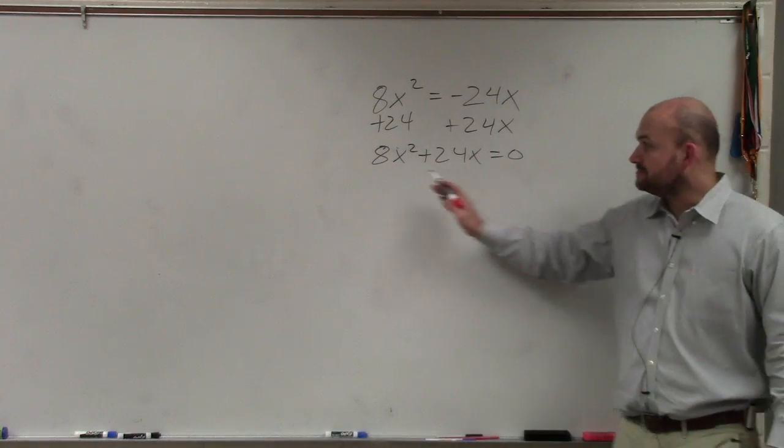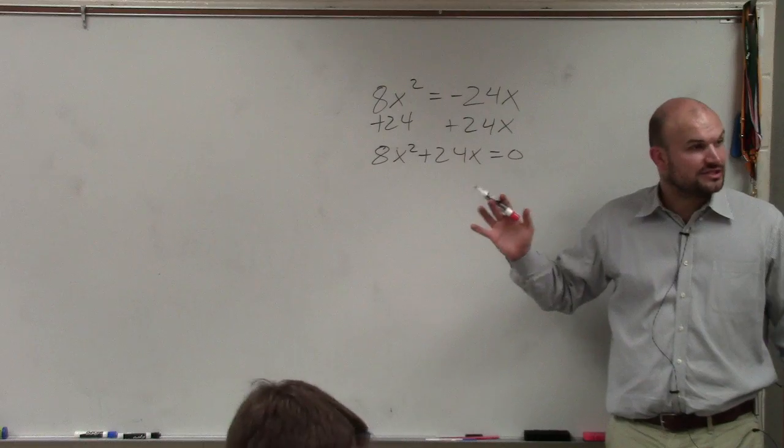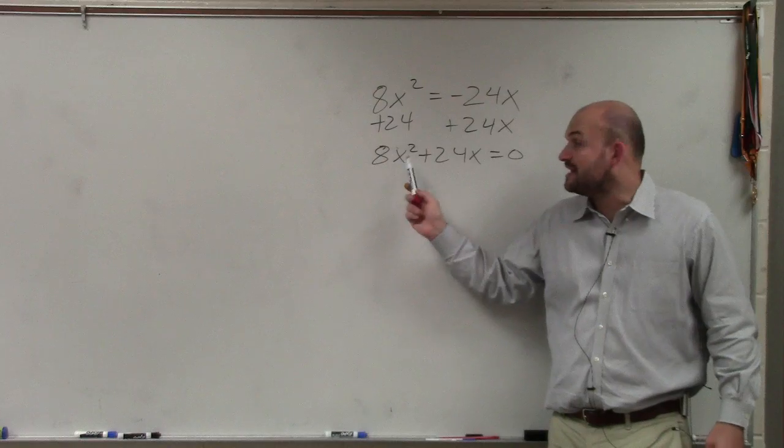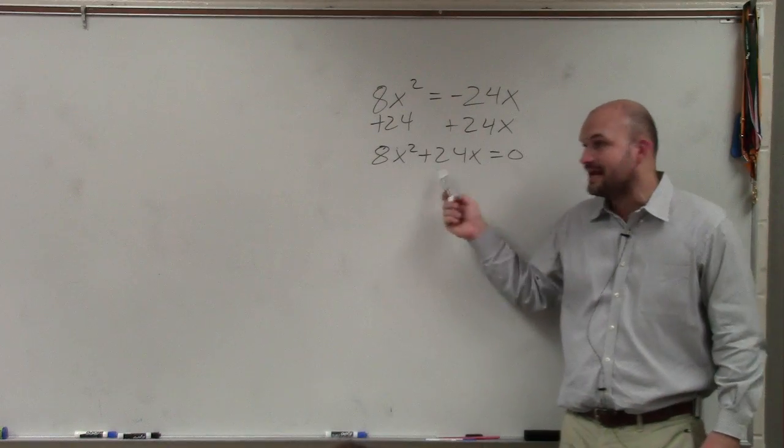So now what we're going to do is we're going to factor out the GCF. Basically, we'll call our greatest common factor. What we're going to do is the greatest common factor, the number that divides evenly into 8x squared and 24x.